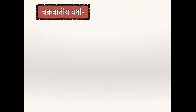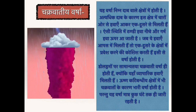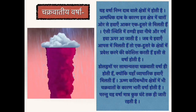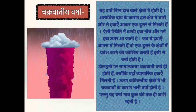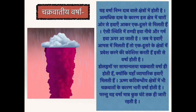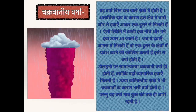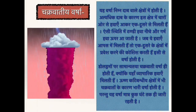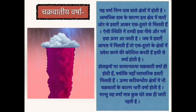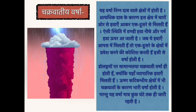यह वर्षा निम्न दाब वाले क्षेत्रों में होती है। अत्यधिक दाब के कारण इस क्षेत्र में चारों ओर से हवाएं आकर एक दूसरे से मिलती हैं। ऐसी स्थिति में ठंडी हवा नीचे और गर्म हवा ऊपर आ जाती है। जब यह हवाएं आपस में मिलती हैं, तो उष्ण कटिबंधीय क्षेत्रों में भी चक्रवातों के कारण भारी वर्षा होती है, परन्तु यह वर्षा मात्र कुछ घंटे तक ही जारी रहती है।